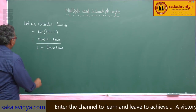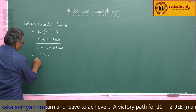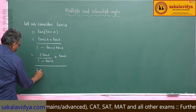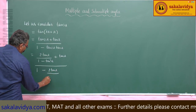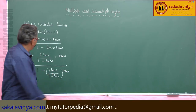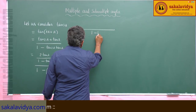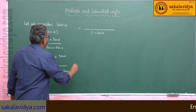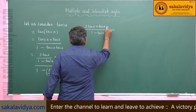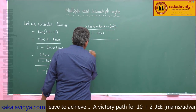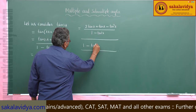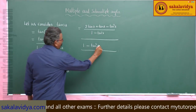We replace tan(2a) with its value: 2tan(a) divided by (1 - tan²a). So the expression becomes: [2tan(a)/(1 - tan²a) + tan(a)] divided by [1 - (2tan(a)/(1 - tan²a))·tan(a)]. Taking (1 - tan²a) as the LCM, the numerator becomes 2tan(a) + tan(a) - tan³(a).